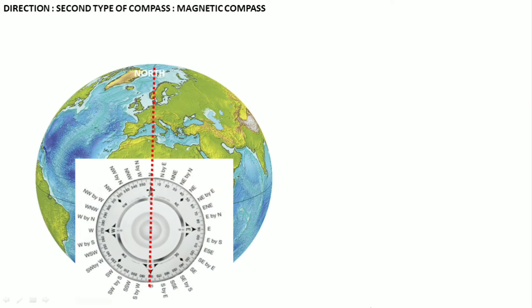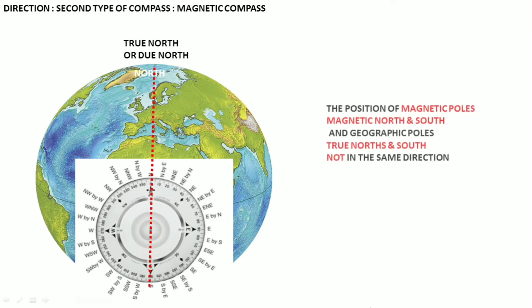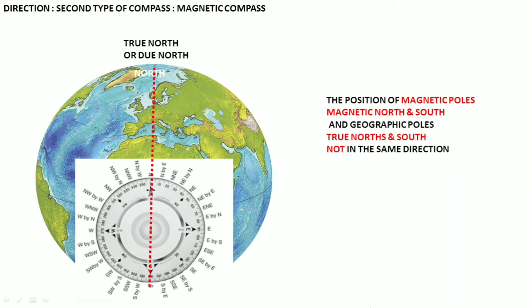The true north and south is where the axis meets the earth. When a freely suspended magnet, influenced only by the earth's magnetism, is placed on the earth, it comes to rest pointing towards magnetic north and south. The position of magnetic north and magnetic south are not the same as the geographical poles — they are in different directions.